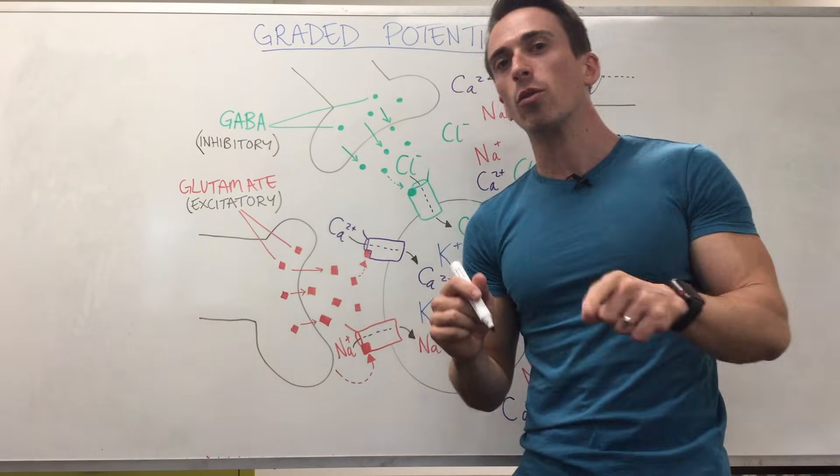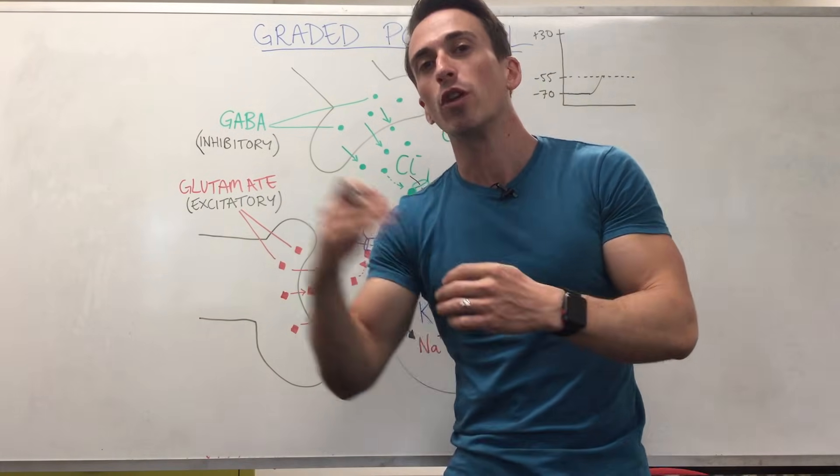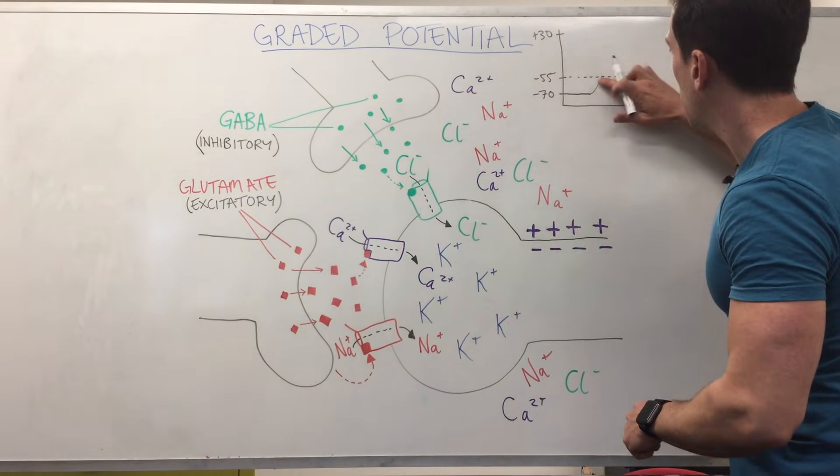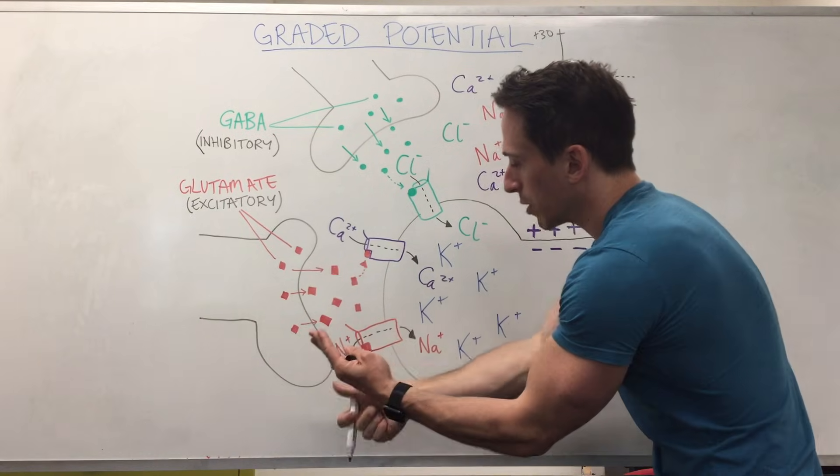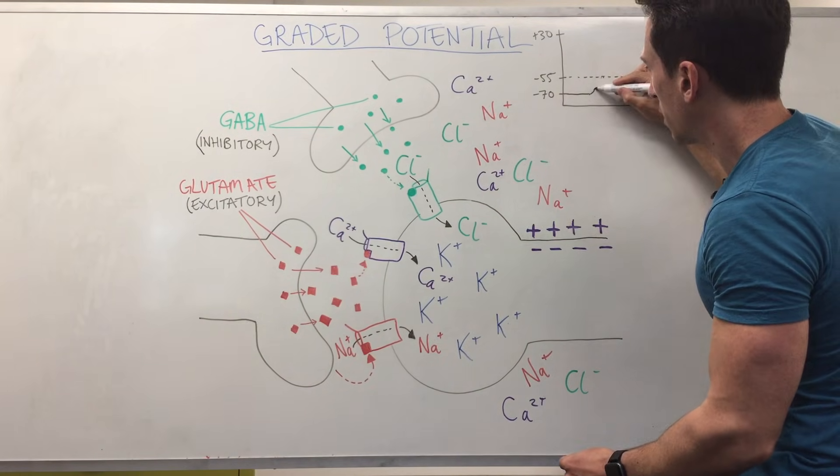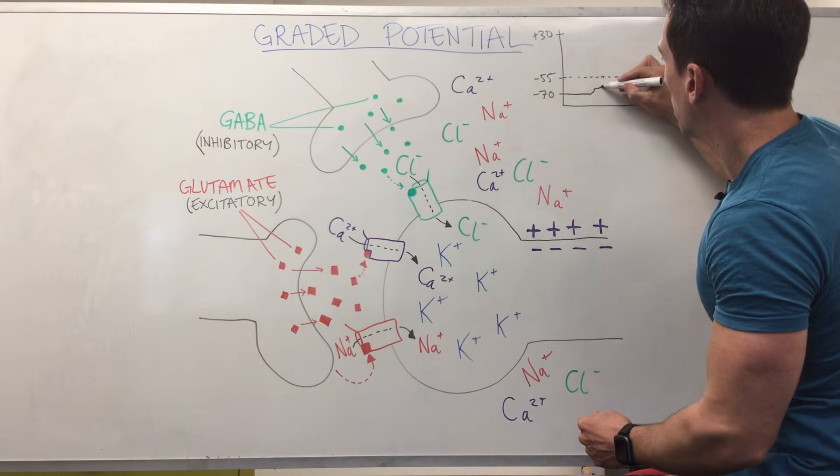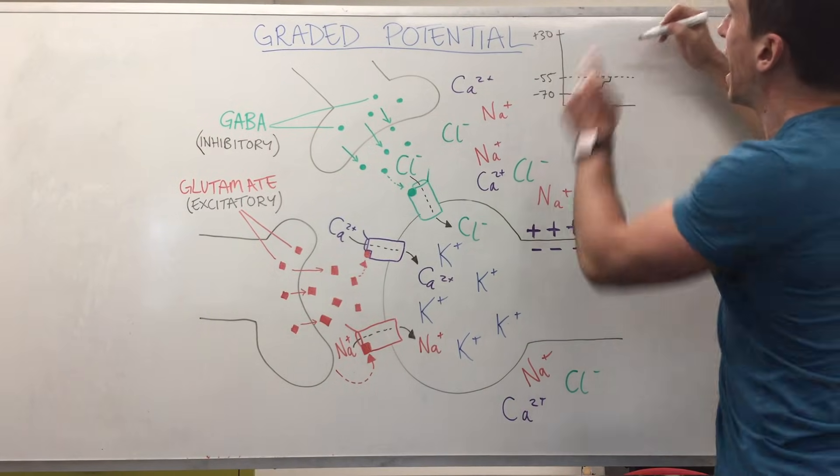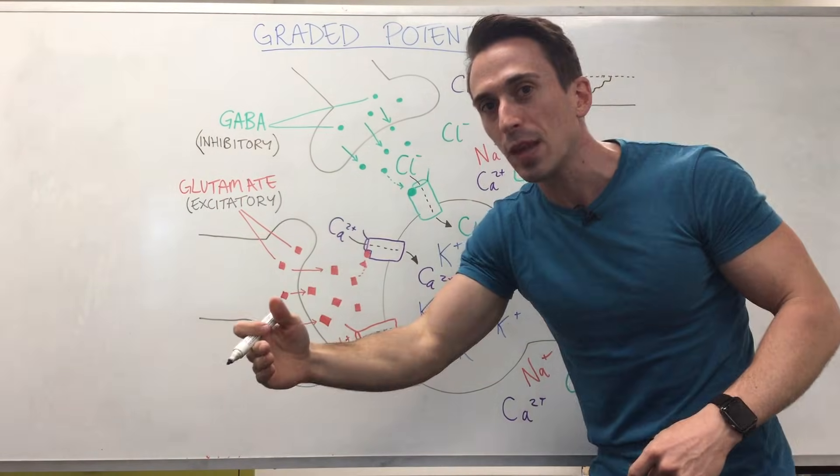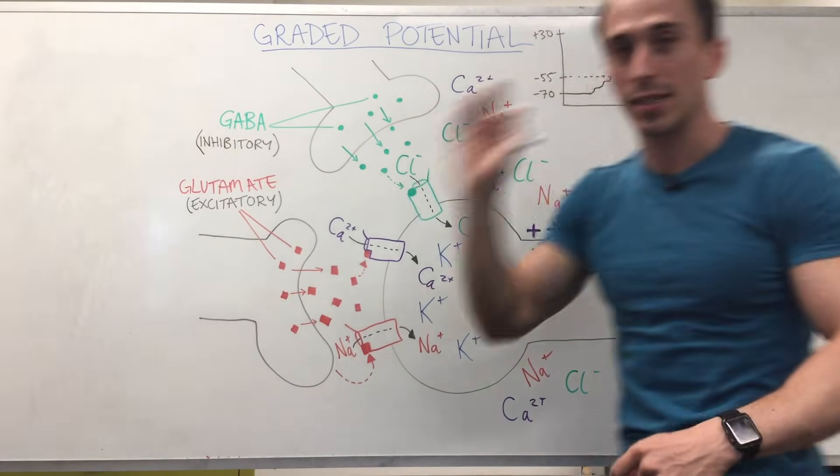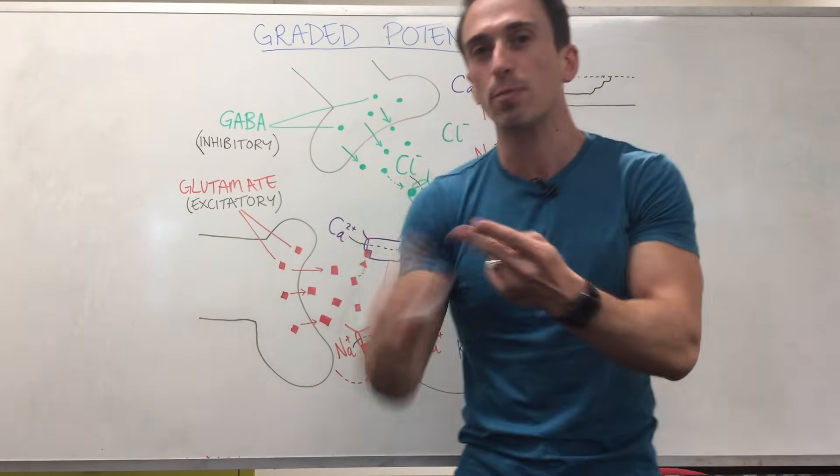Now that's spatial summation. There's another one called temporal summation, which means over time. So that means if we just focus on one channel and we open up that sodium channel, positive sodium goes in, then it closes. It goes up like this and then may stop a little bit, and then we open it up again. It may go like this, close it, open it up again, goes like this, and then finally over time enough positive sodium enters the cell that it hits the threshold and a signal is sent. So that's temporal summation versus spatial summation.